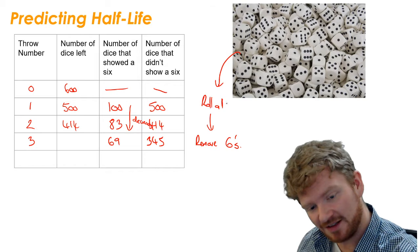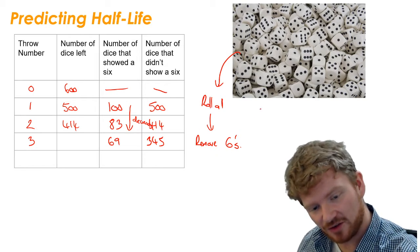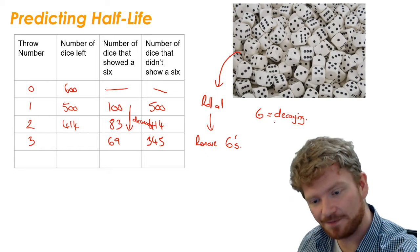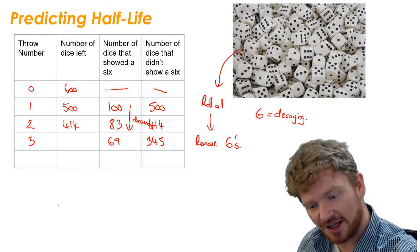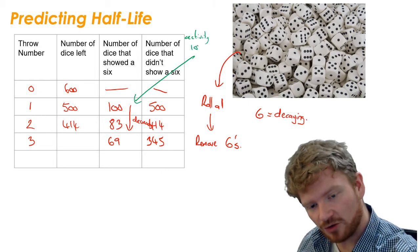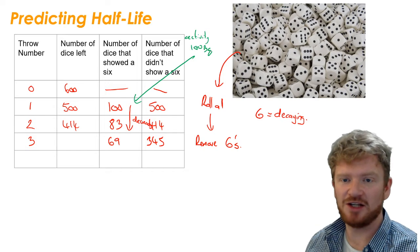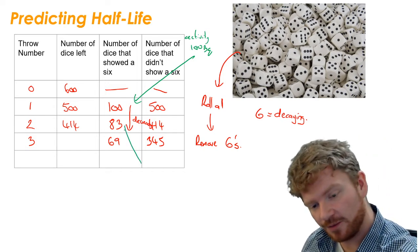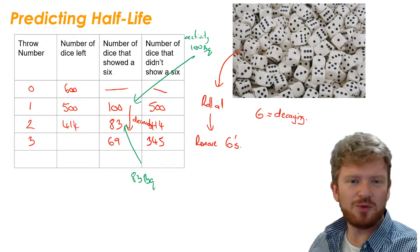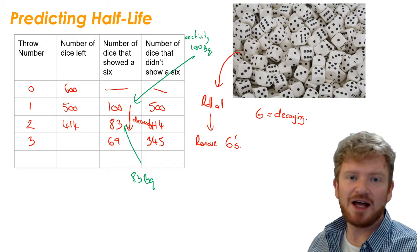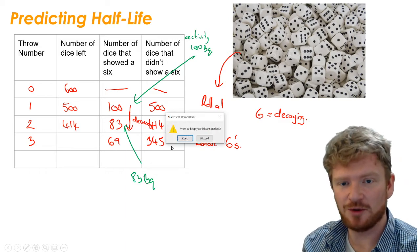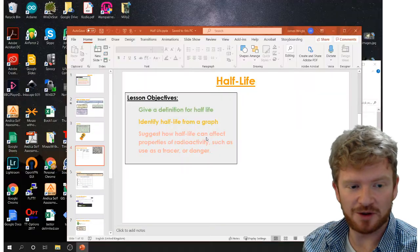If you think about it this way, if I'm thinking about my dice, if I'm saying that the sixes is the same as it decaying, then what I can say is that after the first throw, I have an activity of 100 becquerels. I've got 100 bits of radiation coming out. On the second throw, I have an activity of 83 becquerels. And what you should hopefully see is that over time, as my activity goes on, I lose activity. As I have fewer and fewer radioactive particles left, I'm going to have fewer and fewer doing their decay.